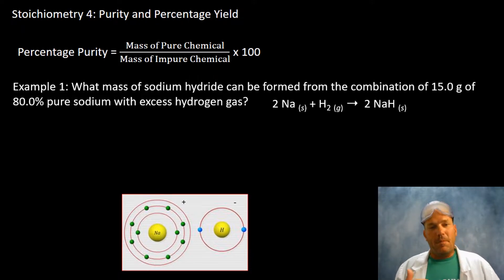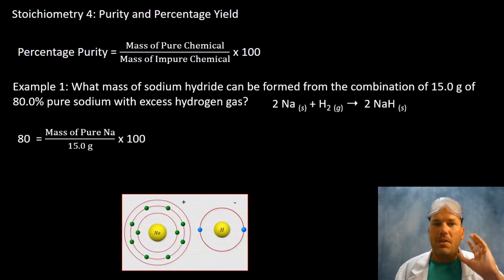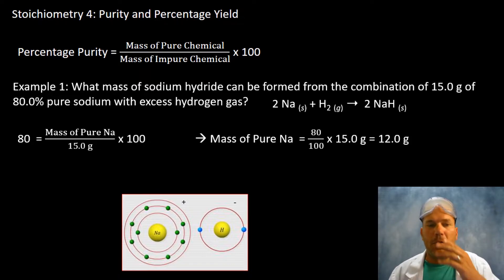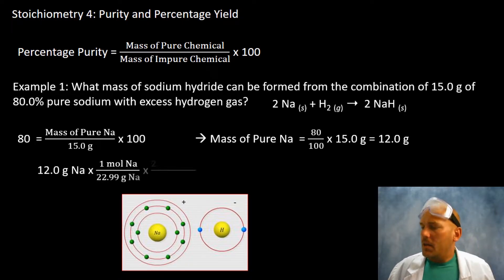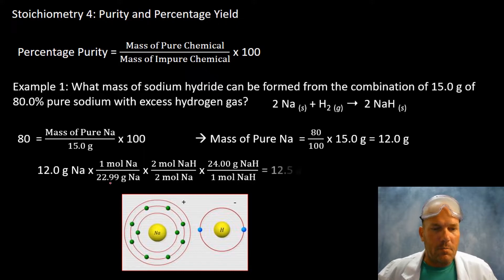Now most of us are probably saying geez, that's 0.8 multiplied by 15. If you want to use a plug and chug approach, just so you can see this equation in use, you could pop in all of your numbers here. You could algebraically rearrange this to solve for the mass of pure sodium by multiplying both sides by 15, dividing by 100, however you want to do it, whatever is easiest for you. It works for me, so we're going to use 12 grams of sodium in our stoichiometry.